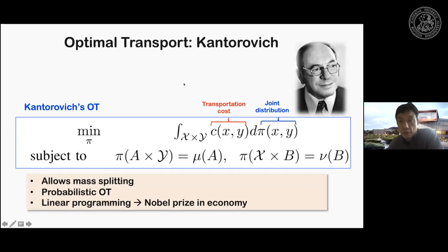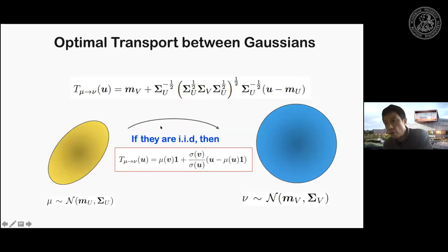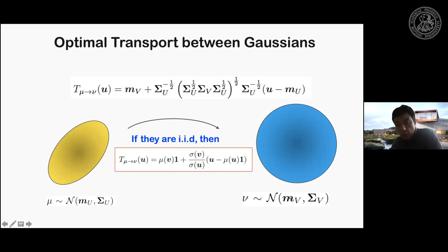Even though these formulations look complicated, for simple Gaussian cases optimal transport is easy to find. For example, if μ is a Gaussian with mean μ_u and covariance Σ_u, and ν is another Gaussian with mean μ_v and covariance Σ_v, the optimal transportation map is given by a closed-form equation. Furthermore, if both are i.i.d. Gaussians with different means and variances, the map simplifies further.